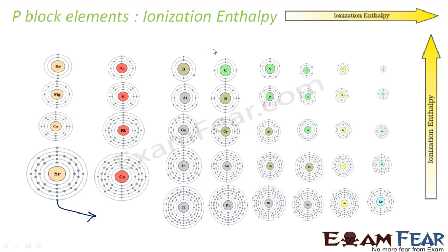So this trend we have seen: if you go across a period, the size of the atom decreases and the charge increases, so these electrons are more tightly held to the nucleus. So it is very difficult to pluck one electron — more energy is required.